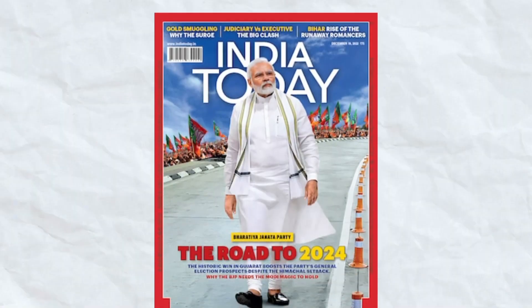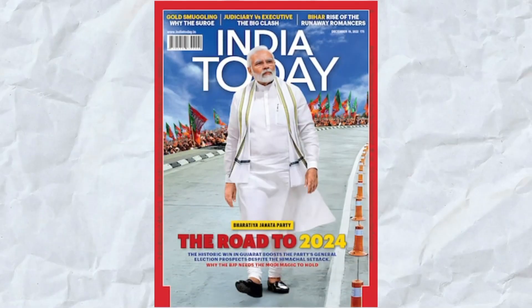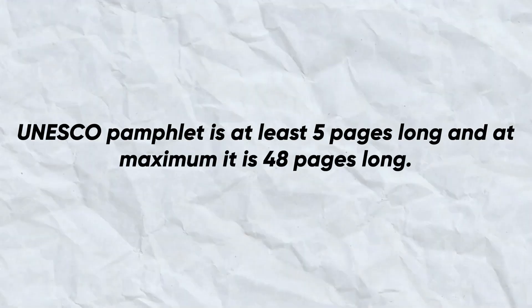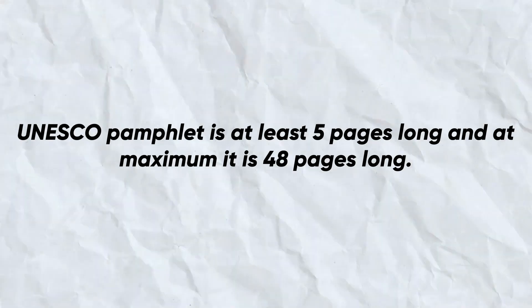According to UNESCO, a pamphlet is non-periodical — that means there is no fixed date or fixed month, unlike a magazine such as India Today which comes every week. It is not periodical; it is non-periodical. According to UNESCO, a pamphlet is at least five pages long and at maximum has 48 pages. So remember for the examination: a pamphlet has at least five pages but not more than 48 pages.